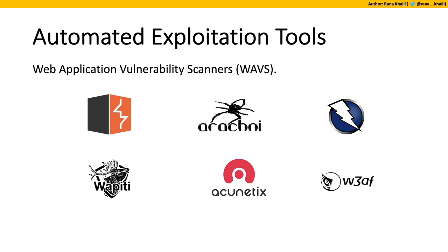We can't end this section without mentioning automated exploitation tools — web application vulnerability scanners. These are tools that crawl your web application and look for vulnerabilities. Any decent scanner should be able to scan for CORS security misconfigurations, so you should add one to your methodology. I personally use Burp Pro scanner, but there are many options ranging from free and open source to expensive commercial ones, depending on your organization and preference.